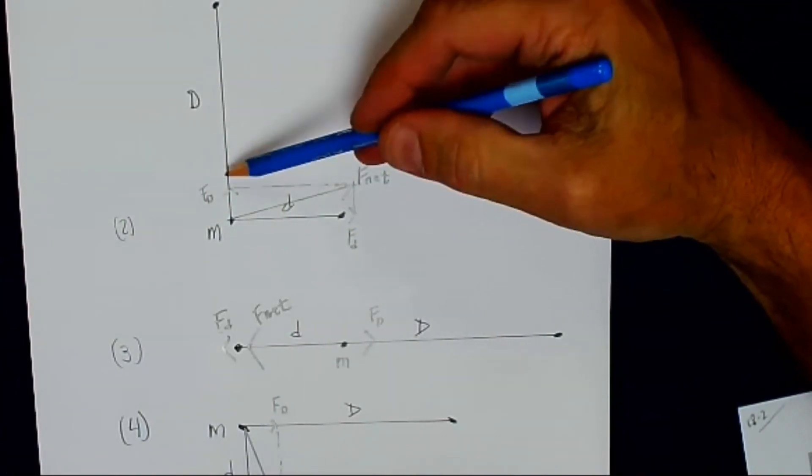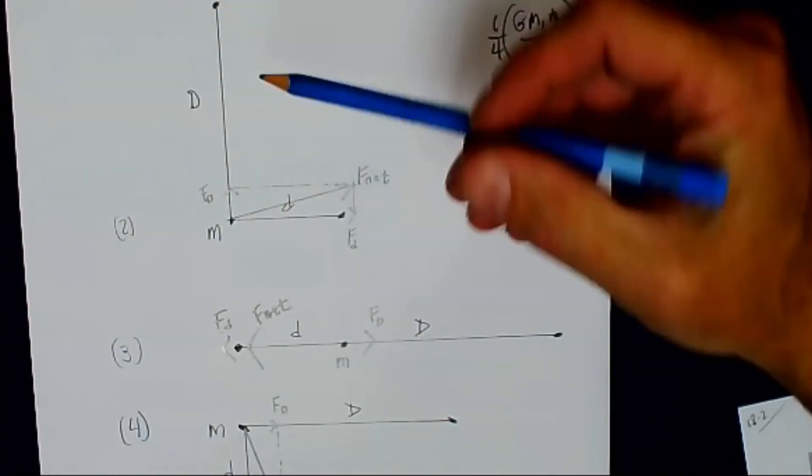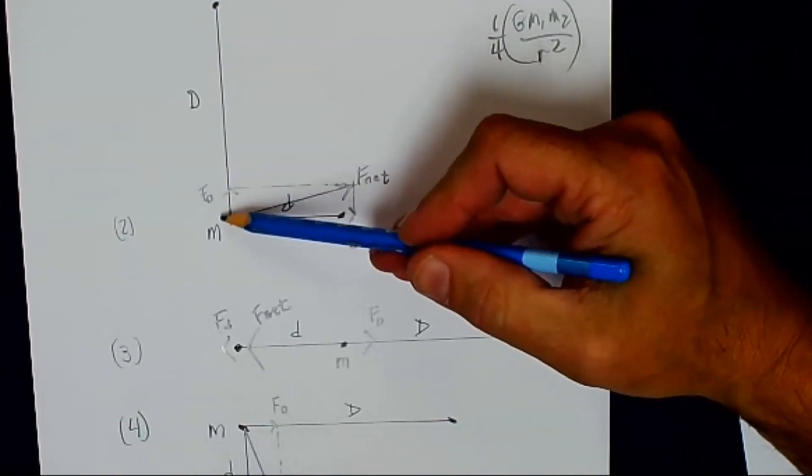And of course, that's because big D is much further away. So its contribution to the net force is much less.